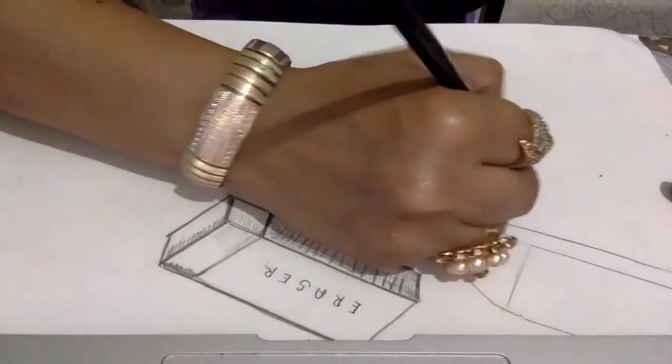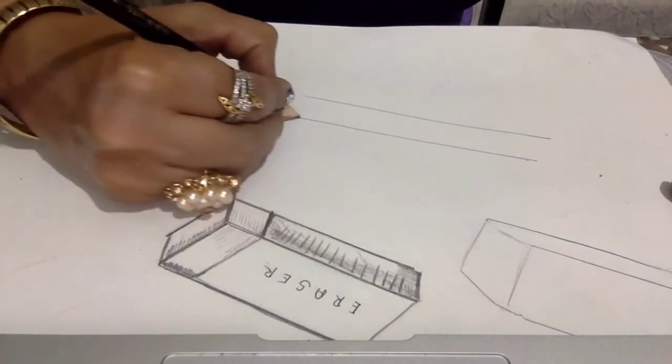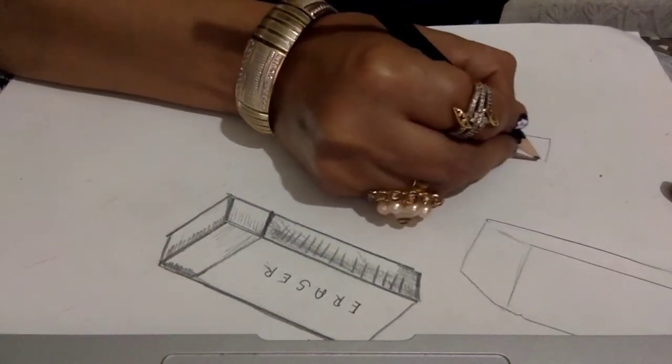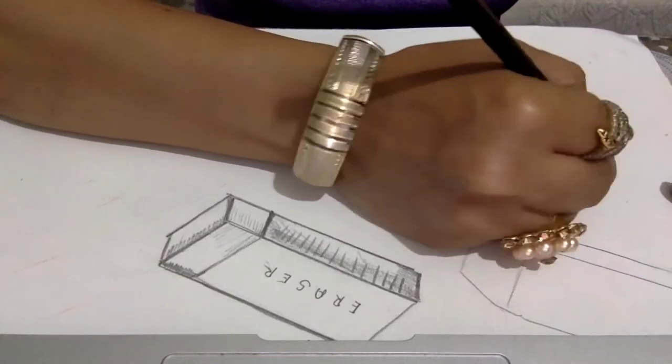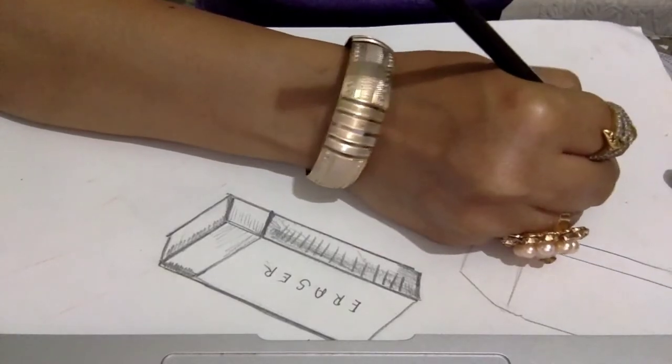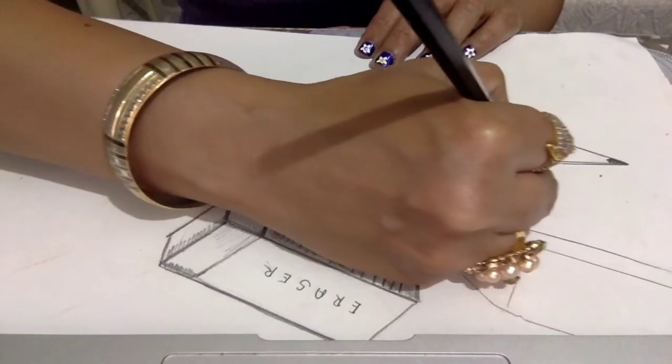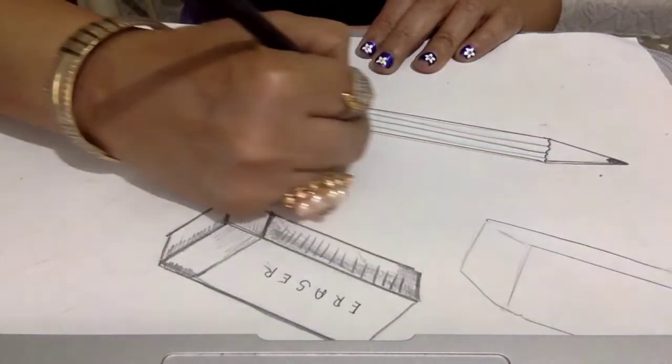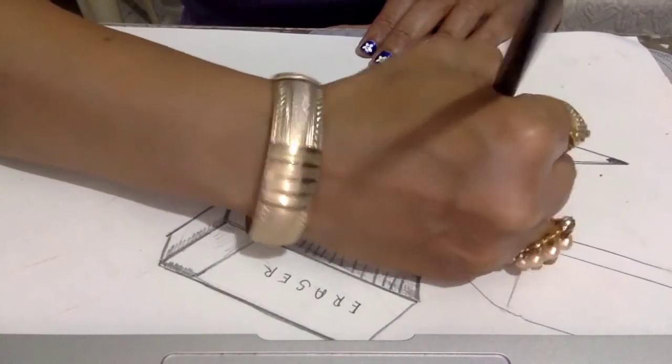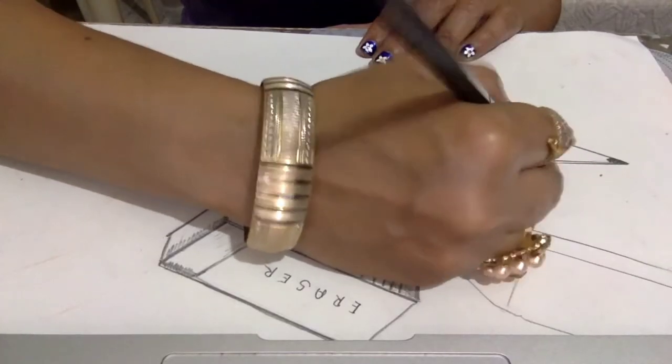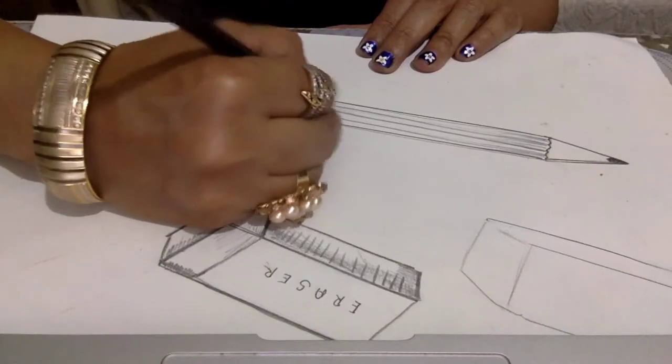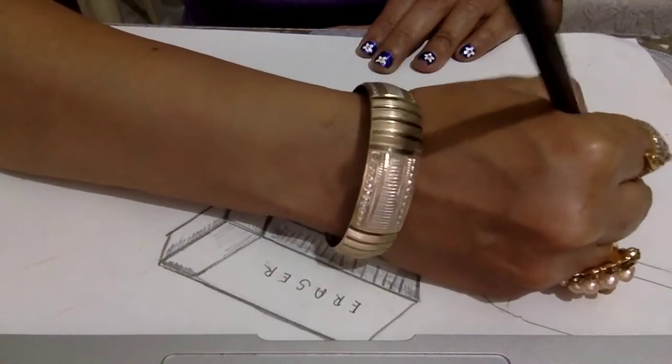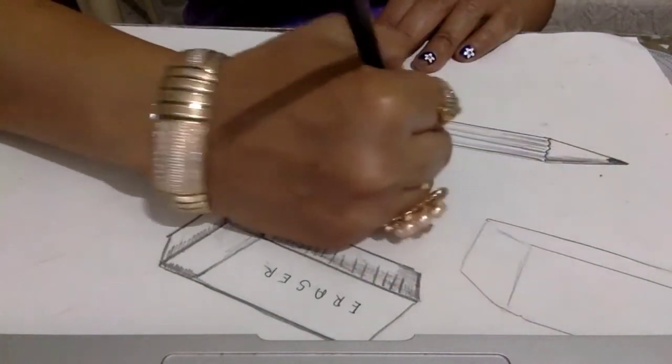Next, we're going to draw a pencil. Simple form of pencil: two parallel lines, make a triangle on the top, give some dark portion to show the lead portion, make some more lines and give the shading. The pencil is done.